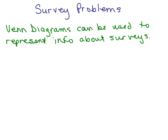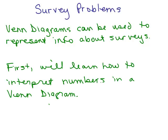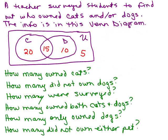We're going to learn how to do survey problems. Venn diagrams can be used to represent information about surveys. First, we're going to learn how to interpret numbers in a Venn diagram — in other words, the survey's been done and somebody's already entered the information in a Venn diagram. Here's our first example: a teacher surveyed students to find out who owned cats or dogs, and the info is in this Venn diagram.